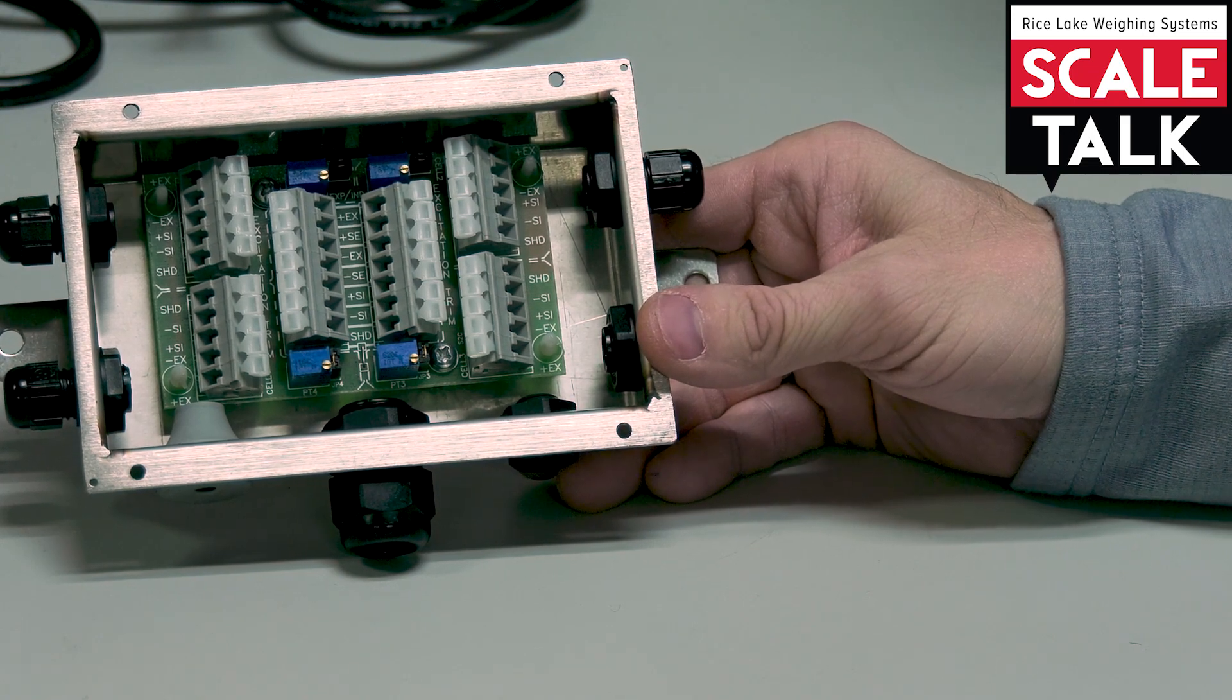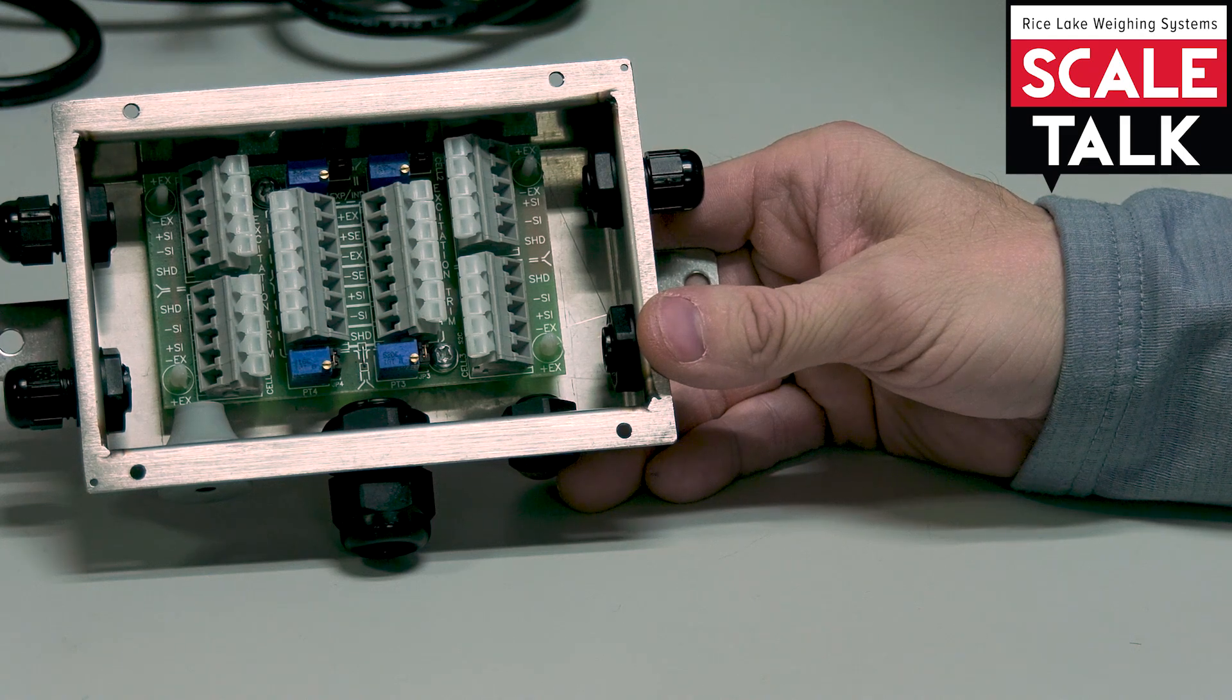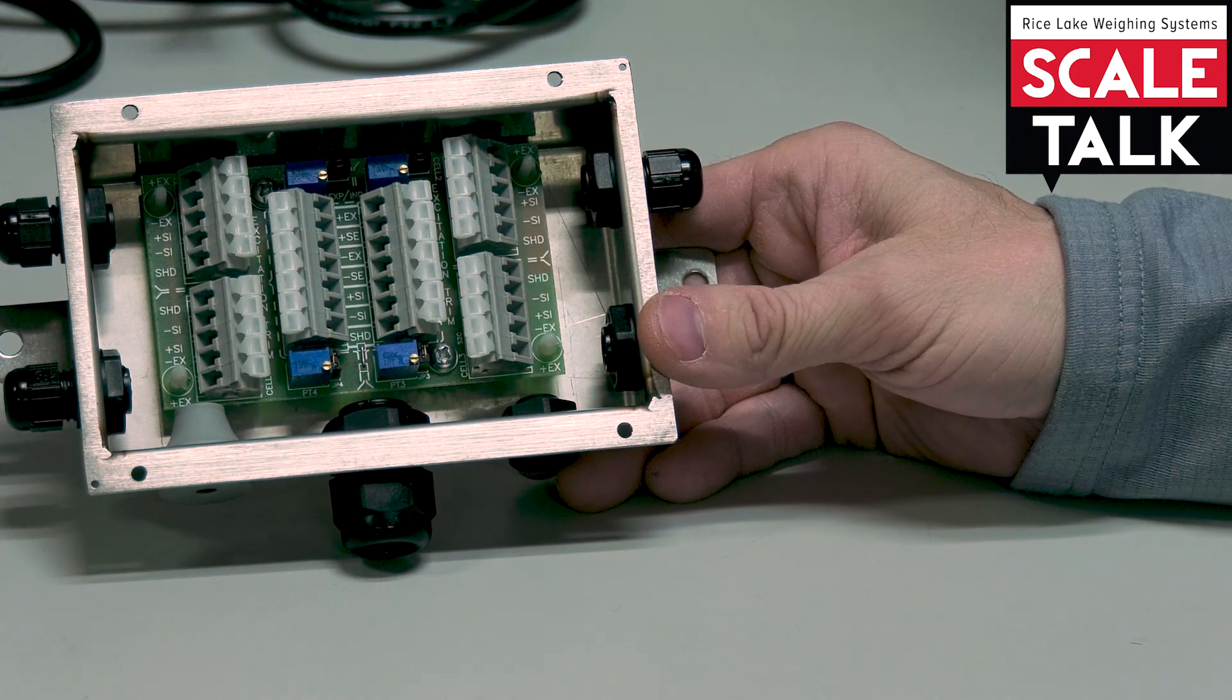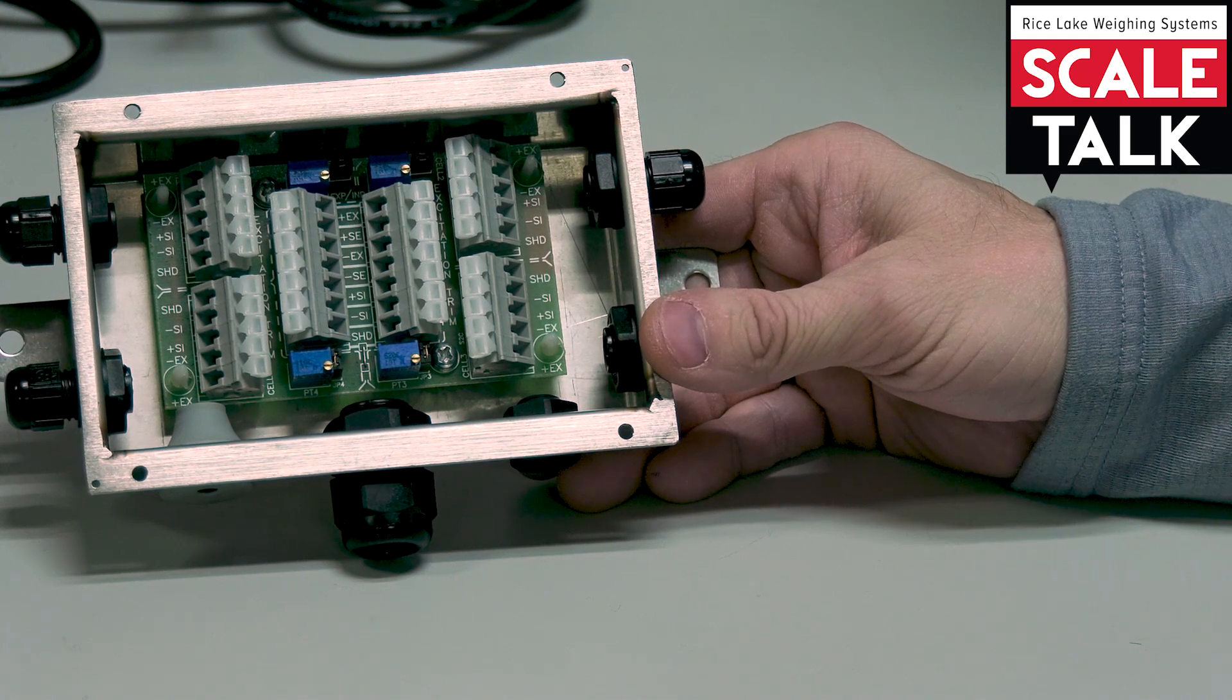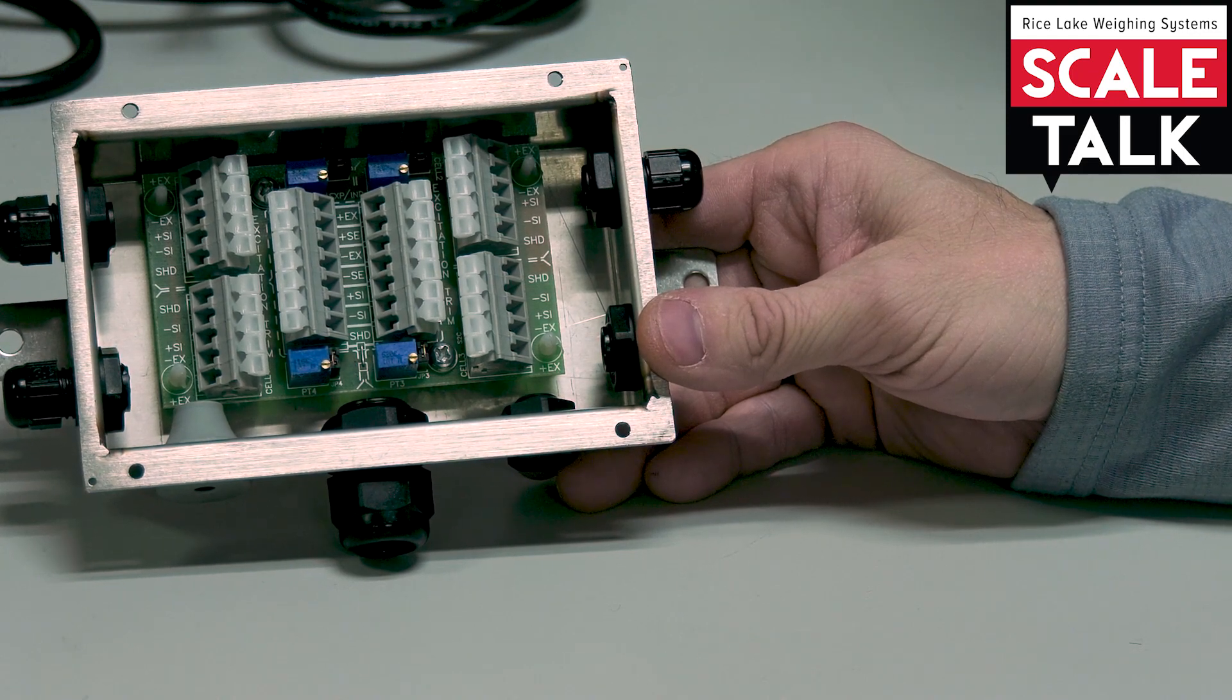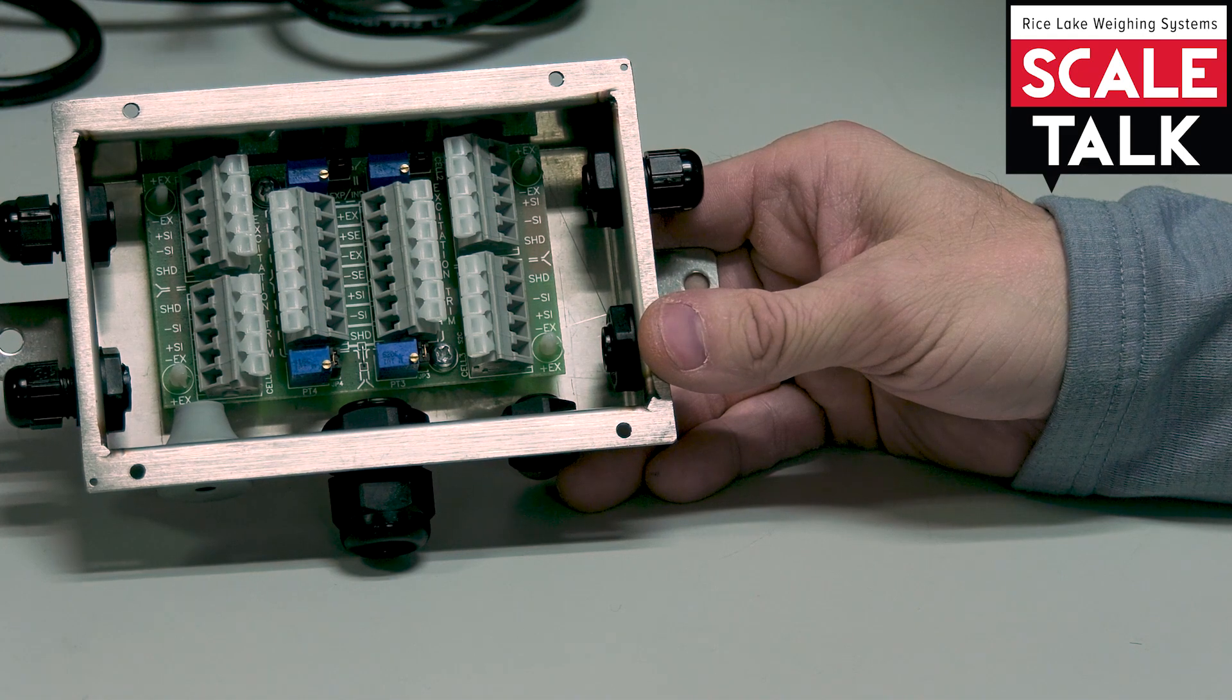Secondly, it allows us the ability to trim. Trimming is the act of creating the same signal-to-weight ratio between all of the load cells. Now you might look up in a catalog and find that a load cell has a 3 millivolt per volt value in terms of its rated output, but not every single load cell that you purchase is going to be exactly 3.0.